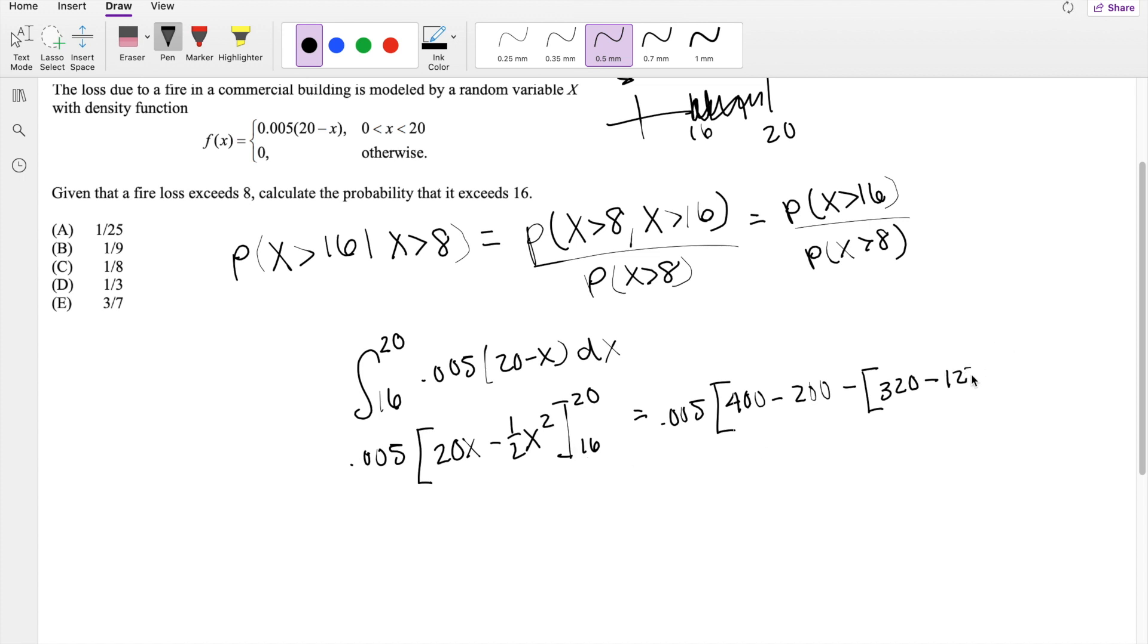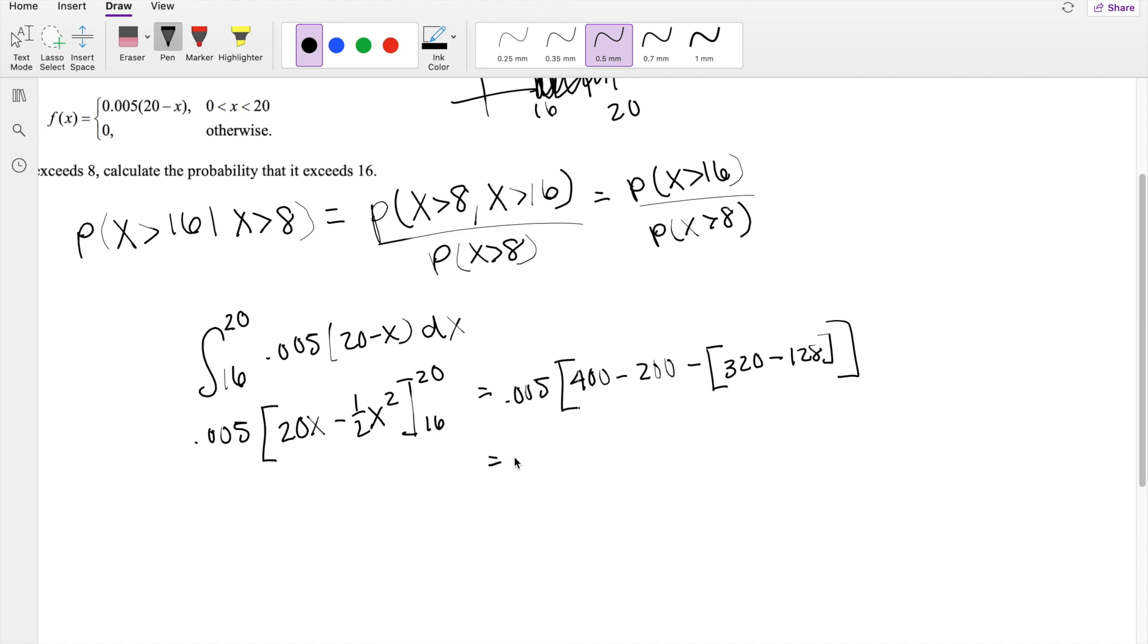So right here you get, this is equal to 0.005, 200, minus 320, minus 128, which is 192. So this is equal to 8 times 0.005, which is 0.04.